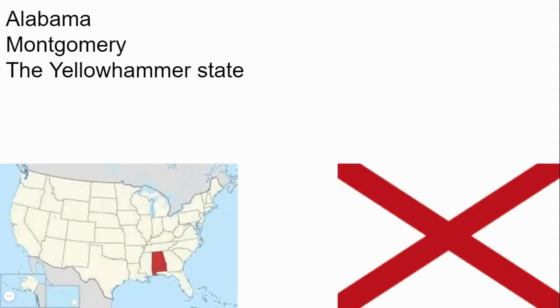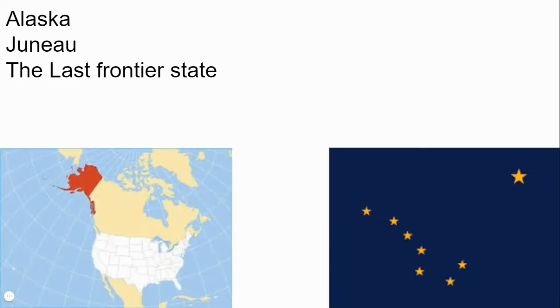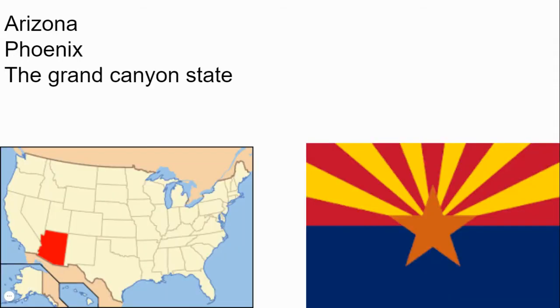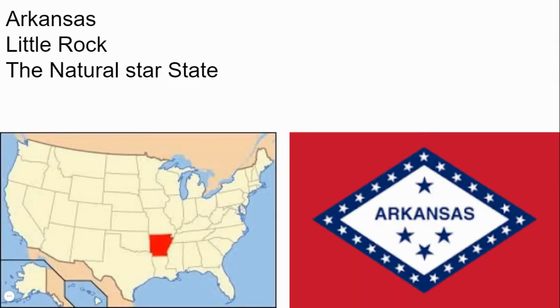The order I'll follow is: state, capital, and nickname. The first state is Alabama with Montgomery as its capital and the Yellowhammer State as its nickname. State Alaska — capital is Juneau and nickname is the Last Frontier State. The state is Arizona and its capital is Phoenix and its nickname is the Grand Canyon State.